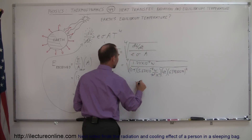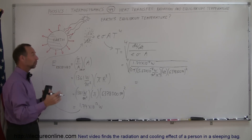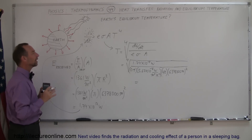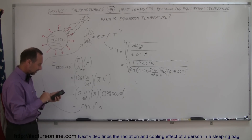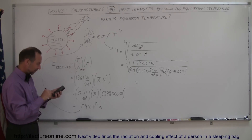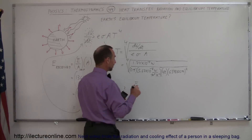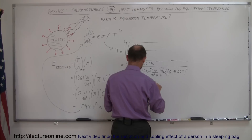That will give us the equilibrium temperature of the Earth, pushing aside factors such as atmosphere, clouds, convection, and heat transfer. Taking 1.74 × 10¹⁷ watts, dividing by 0.9, dividing by sigma (5.67 × 10⁻⁸ W/m²K⁴), dividing by 4, dividing by pi, dividing by (6,378,000)² squared, and taking the fourth root gives us 286 Kelvin.